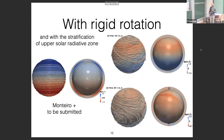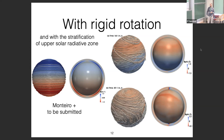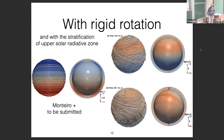We then add rotation and change the stratification, concentrating on a thinner layer resembling the upper part of the solar radiative zone — whereas before we were in a stably stratified atmosphere that may also resemble planetary atmospheres. The long-term evolution is shown here, spanning 300 Alfvén travel times.